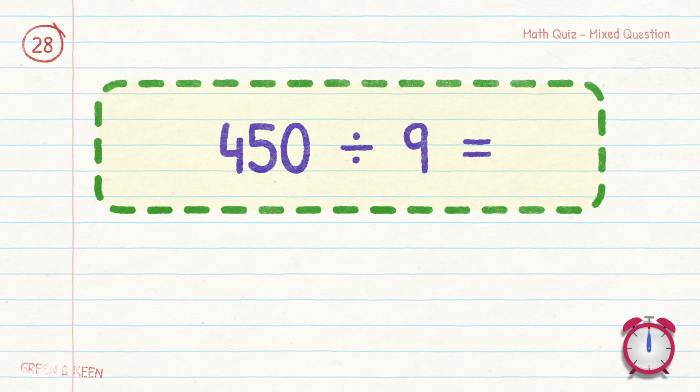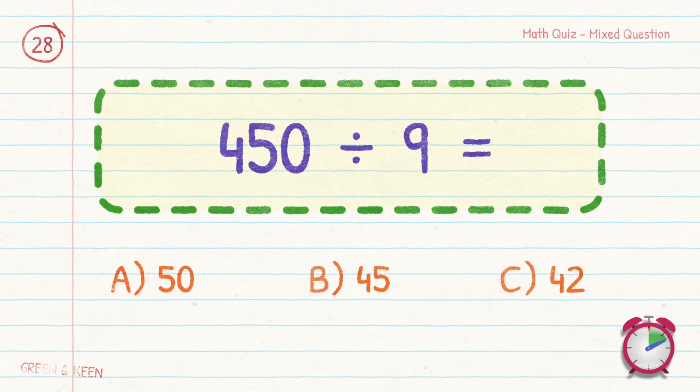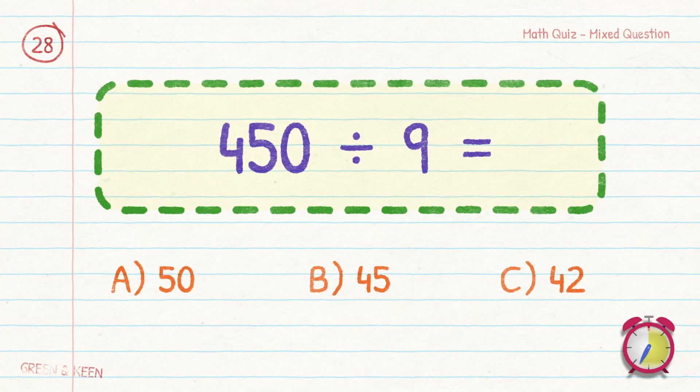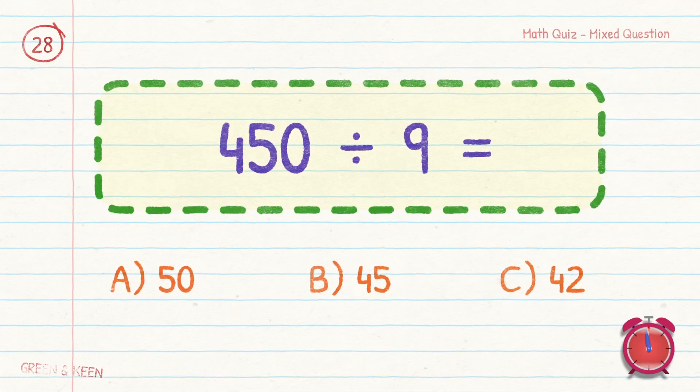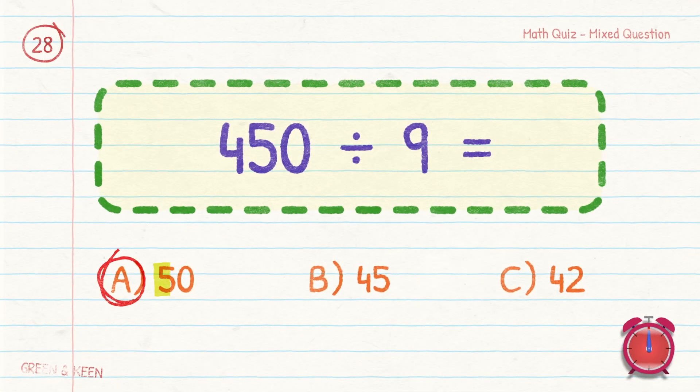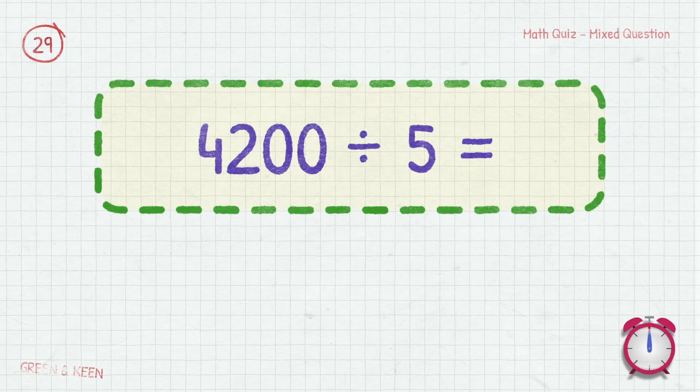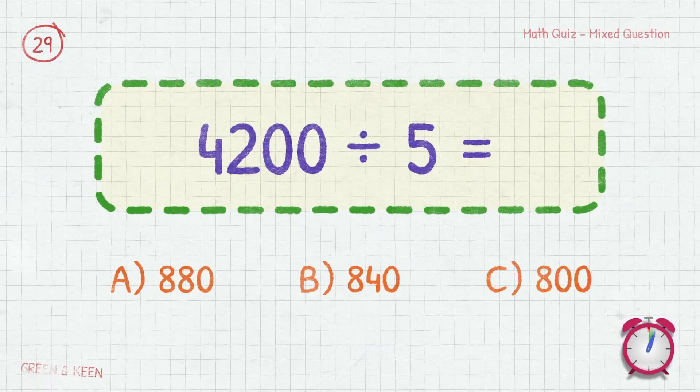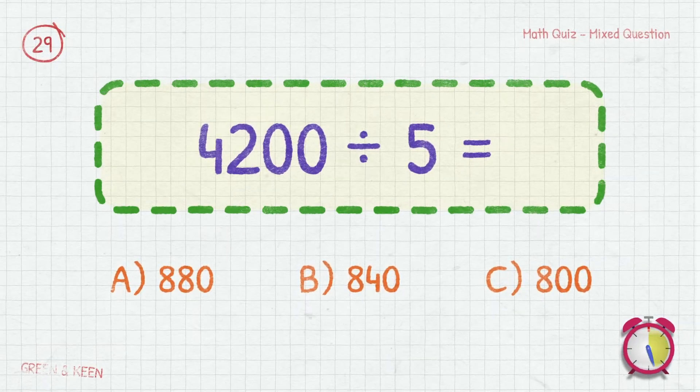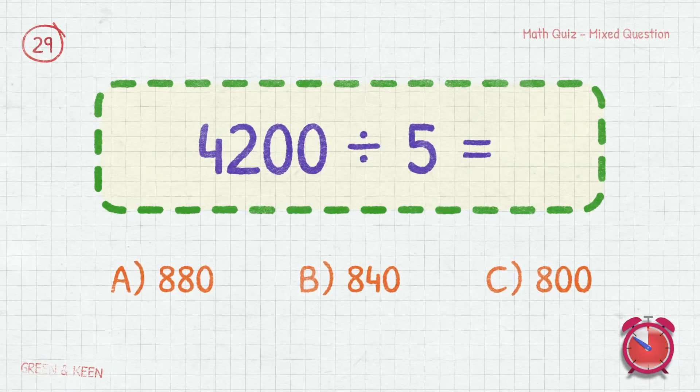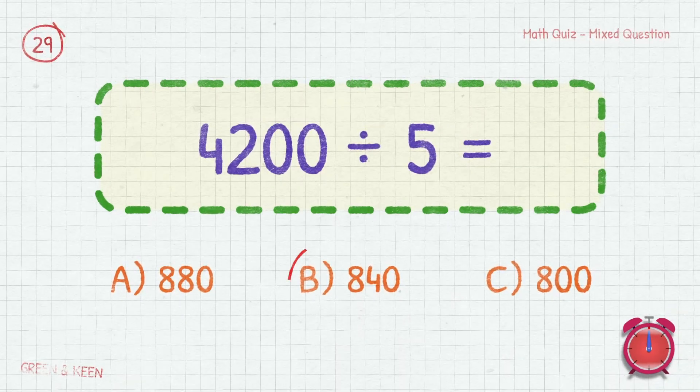450 divided by 9 equals? The answer is 50. 4,200 divided by 5 equals? The answer is 840.